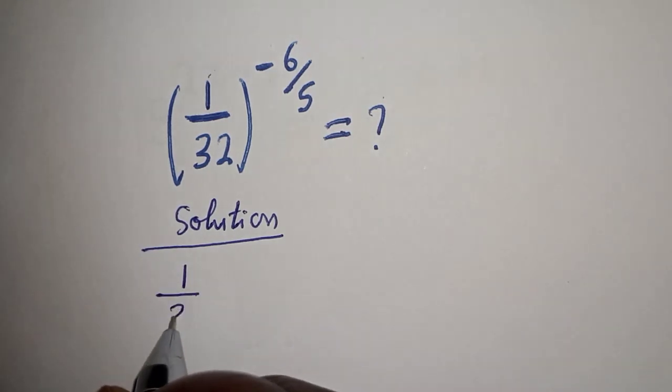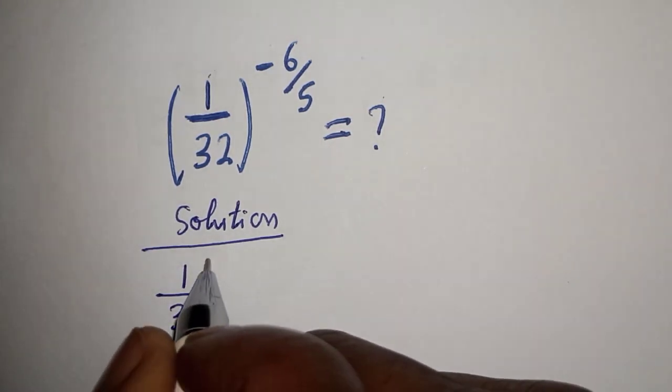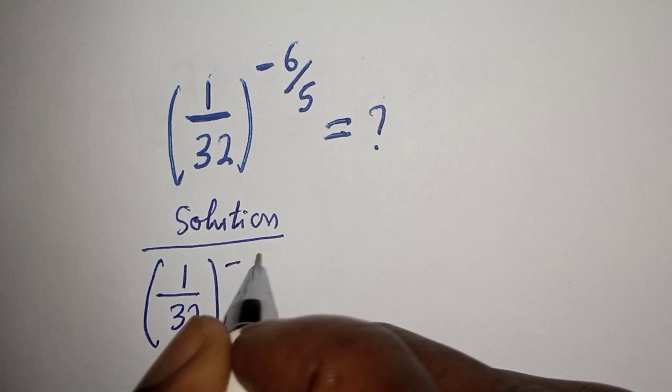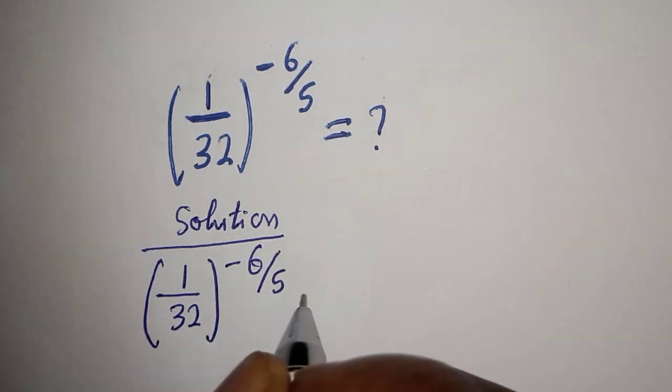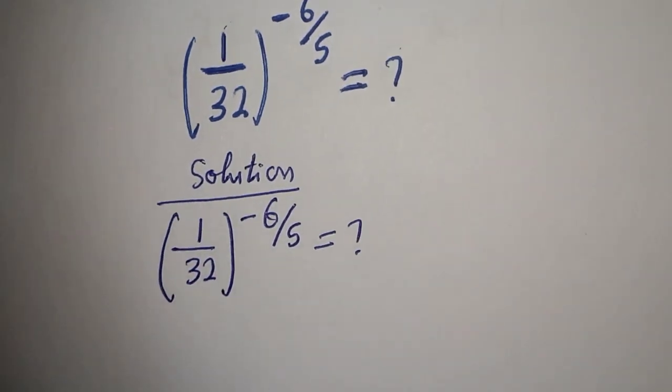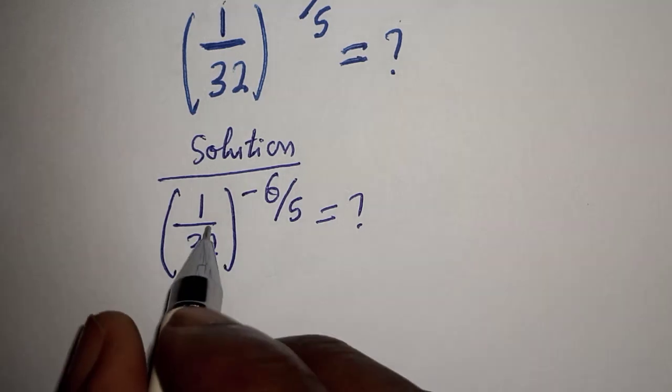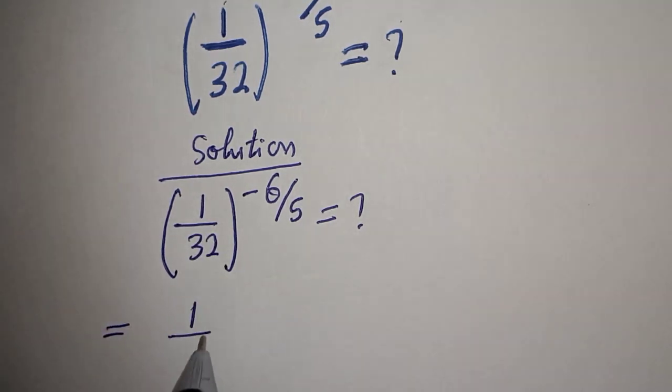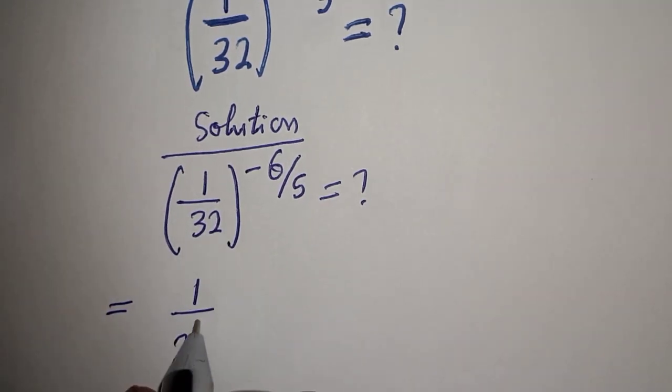1 over 32 to the power of minus 6 over 5 is unknown. This equals 1 over 32, which can be written as 1 over 2 raised to the power of 5.